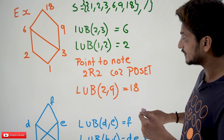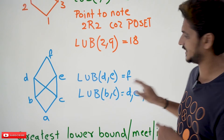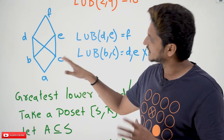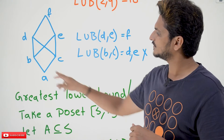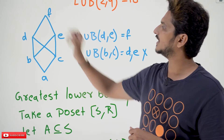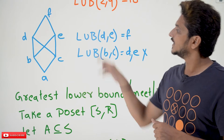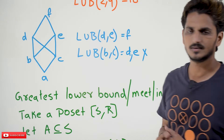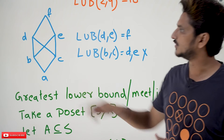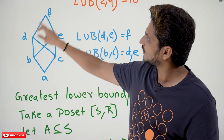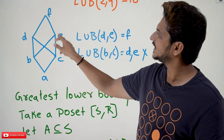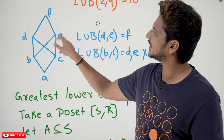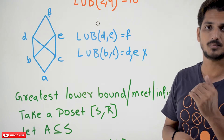Let's take one more important example. We are directly provided with a Hasse Diagram with elements A, B, C, D, E, F. Find the Least Upper Bound of {D, E}. D is forming a relationship with F, and E is forming a relationship with F. So F is the Least Upper Bound of {D, E}.